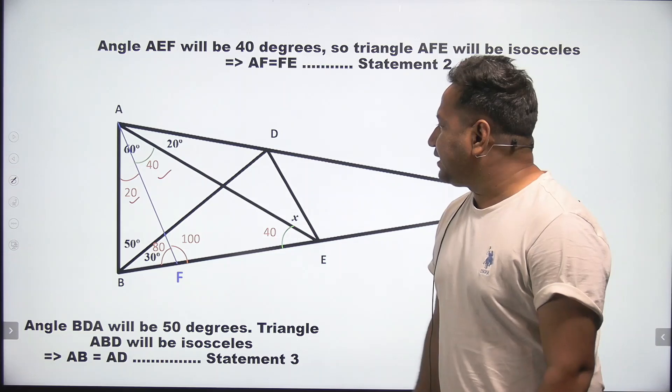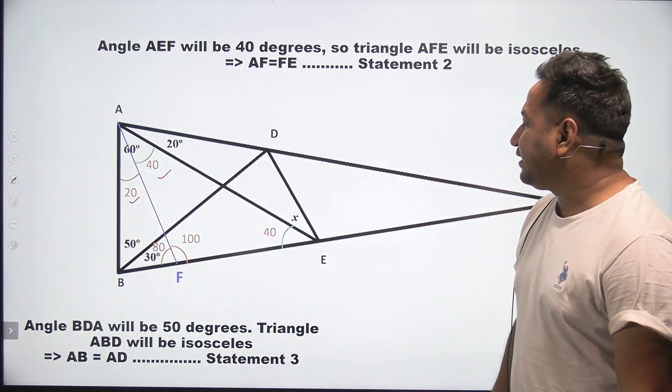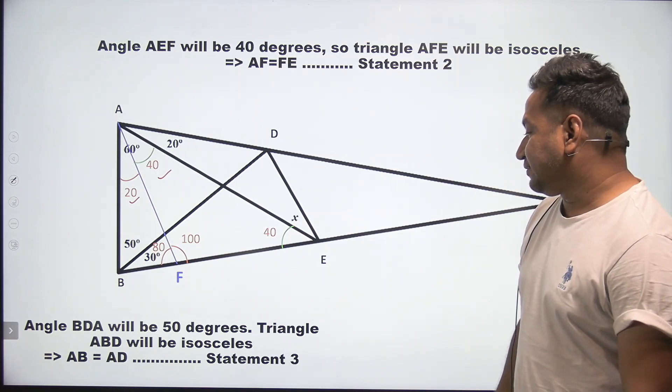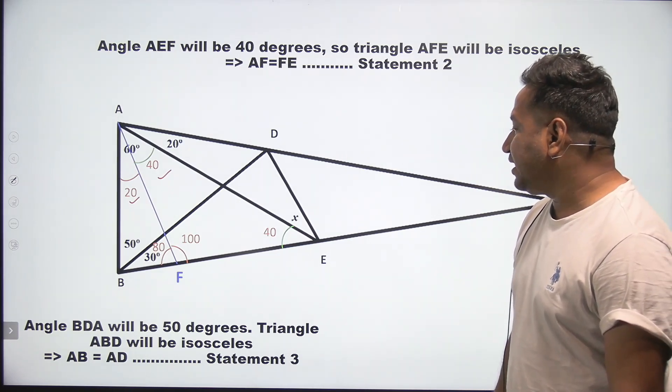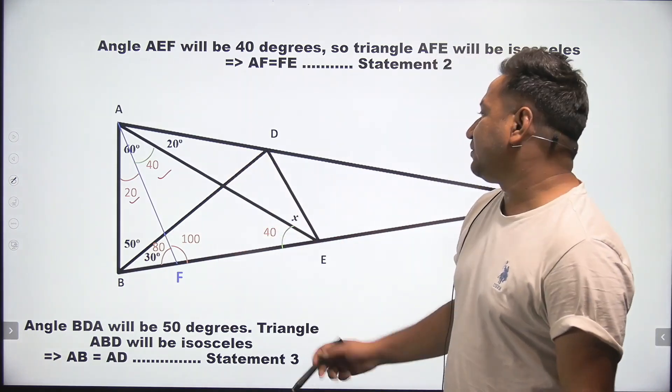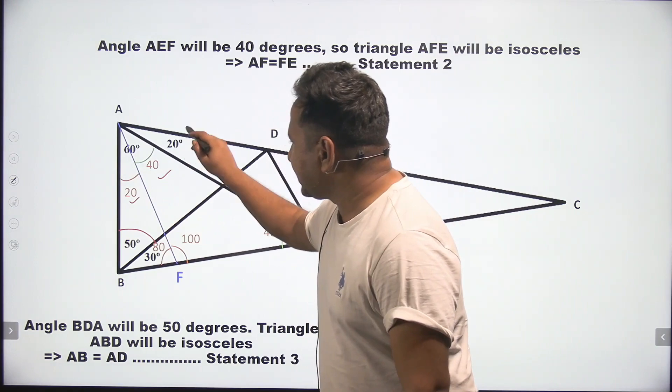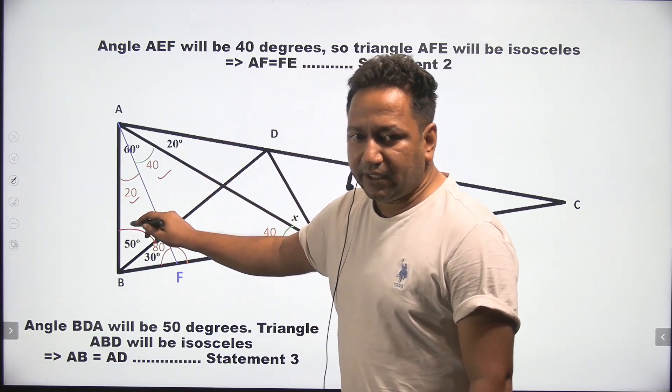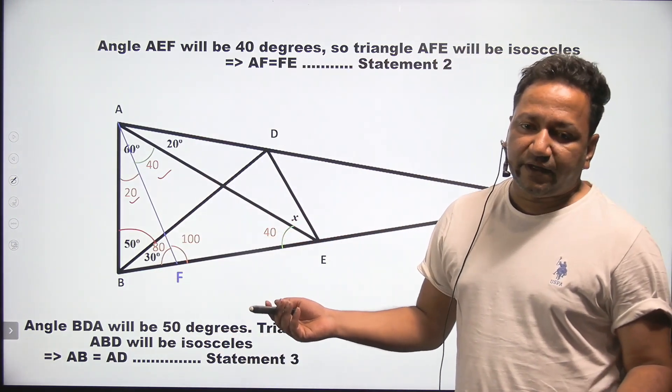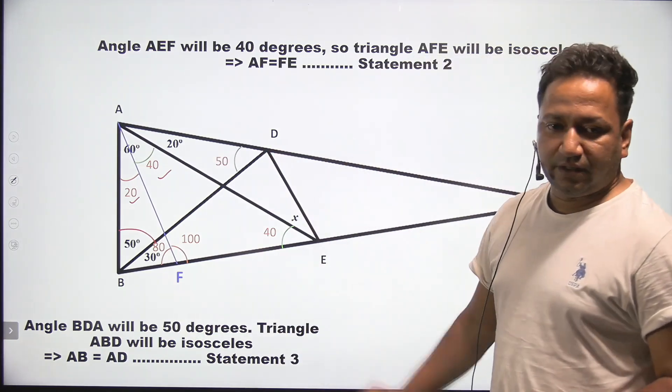Now, angle BDA will be 50 degrees. Why? Because this one is 50, as mentioned. This whole is 80. 80 plus 50 is 130. But the remaining 50 will be this angle BDA.